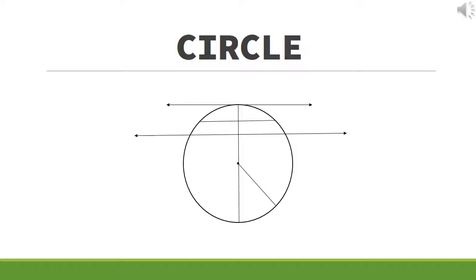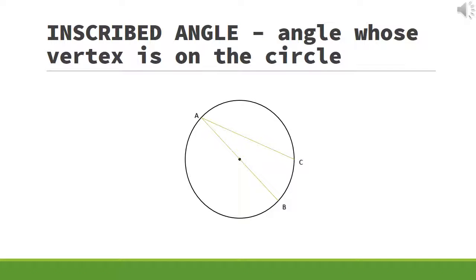These concepts are used in the following theorems. Let us start with inscribed angles. Inscribed angles are angles whose vertex is on the circle, as shown in the example below, wherein angle BAC lies on the circle.